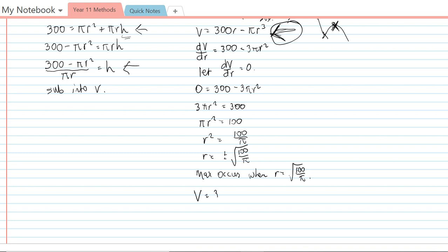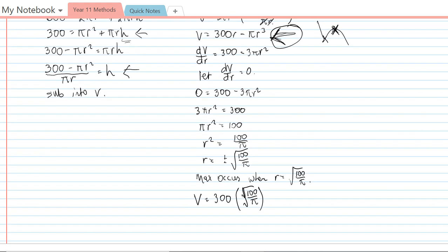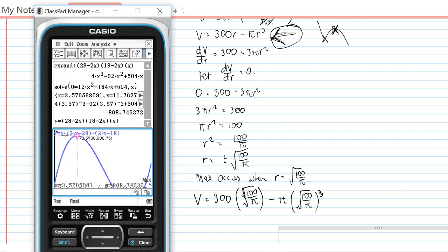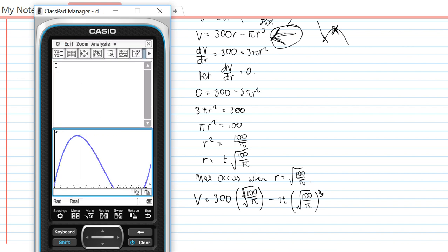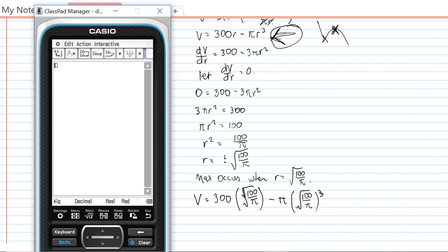So V = 300 times √(100/π) - π times (√(100/π))³. And I'm not going to try to do that without a calculator, so I'll bring this one here up again. Just get rid of this here.